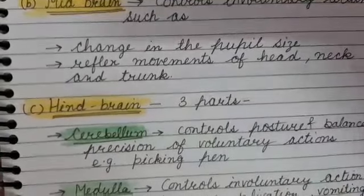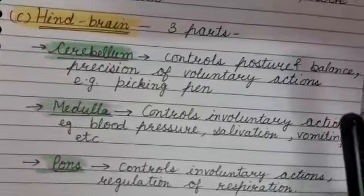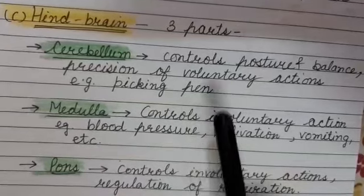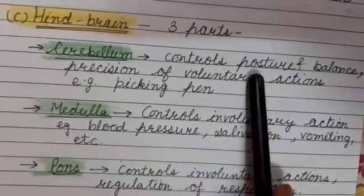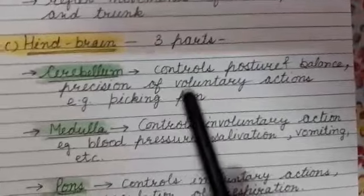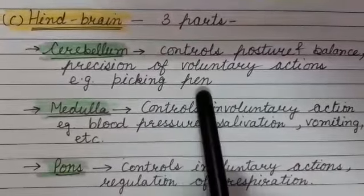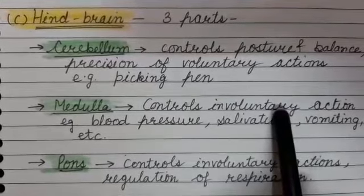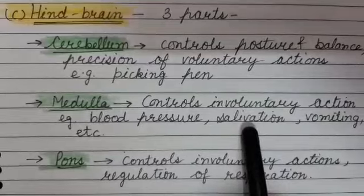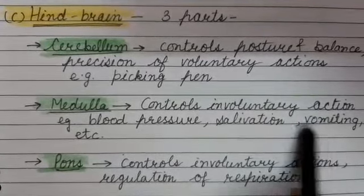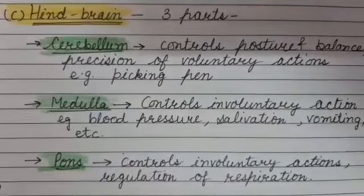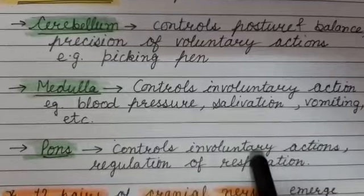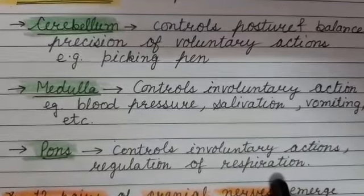Next is the Hindbrain, which is further divided into three parts: Cerebellum, Medulla, and Pons. Cerebellum controls posture, balance, and precision of voluntary actions like picking up a pen. Medulla controls involuntary actions such as blood pressure, salivation after seeing food, and vomiting. Pons also controls involuntary actions that take place in the body, like regulation of respiration.